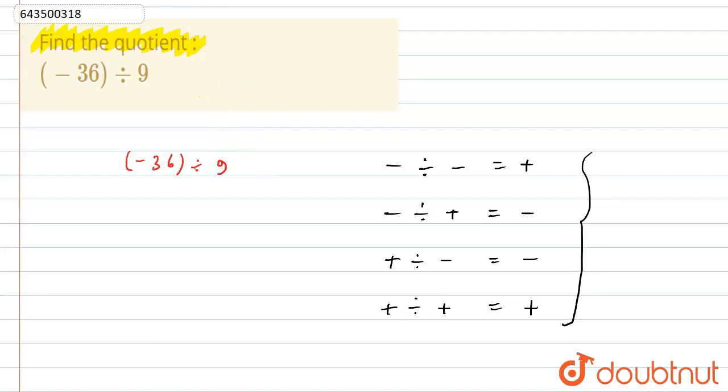Now here it is given that minus 36 divided by 9. That is minus divided by plus, as 9 is a positive number. So the answer will come out to be as minus. The quotient will come out to be as minus.